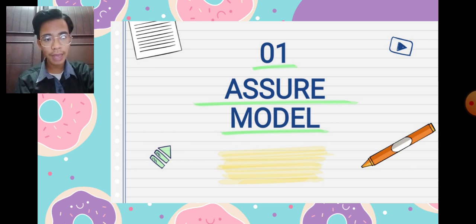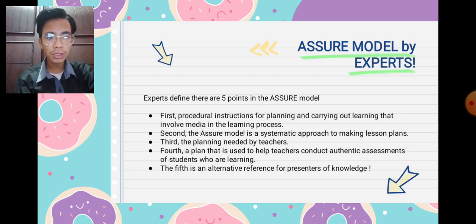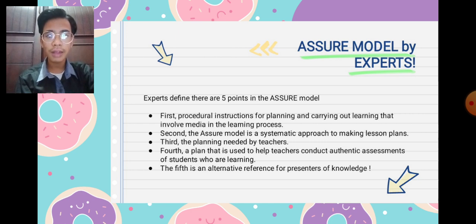The first material we are talking about is the ASSURE Model. The expert defines five points in the ASSURE model. The first is procedural instruction for planning and carrying out learning that involves media and the learning process. The second is that the ASSURE model is a systematic approach to making lesson plans. The third is the planning needed by teachers. The fourth is a plan used to help teachers conduct authentic assessment of students. The fifth is an alternative reference for the presentation of knowledge.